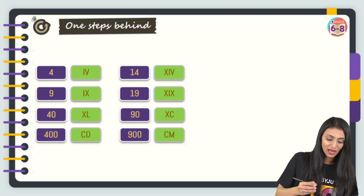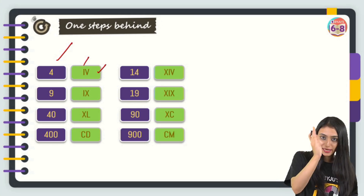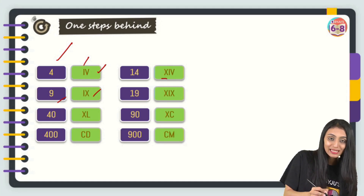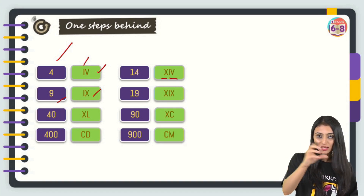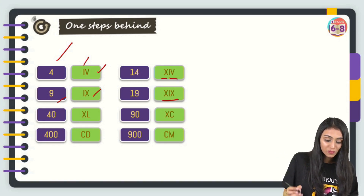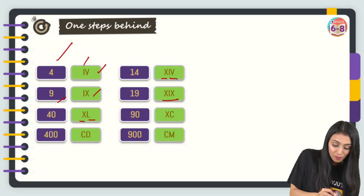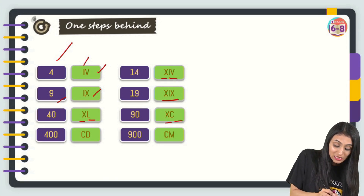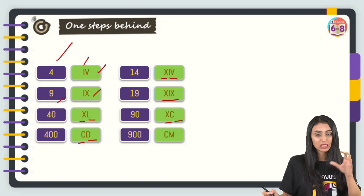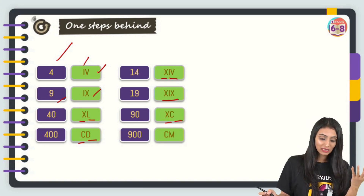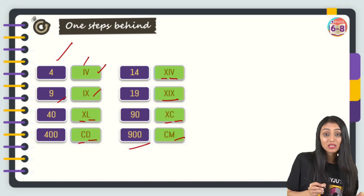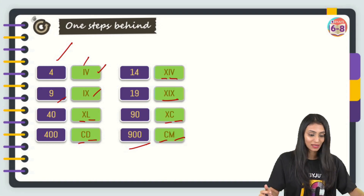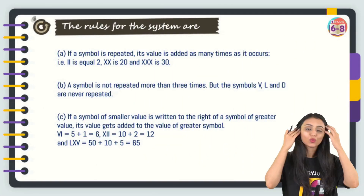To summarize the subtractive notation patterns: 4 = IV, 9 = IX, 14 = XIV, 19 = XIX, 40 = XL, 90 = XC. For 400, D = 500 and C = 100, so 400 = CD. For 900, M = 1000 and C = 100, so 900 = CM. The smaller symbol written before the larger one indicates subtraction.